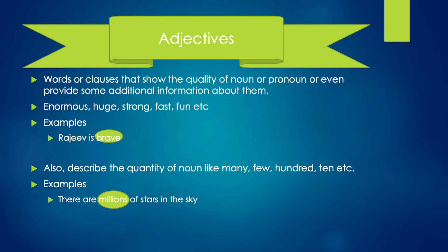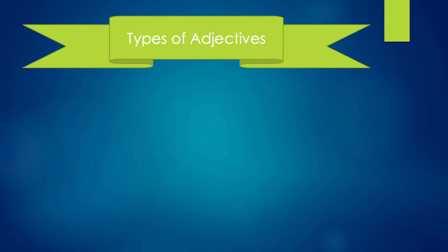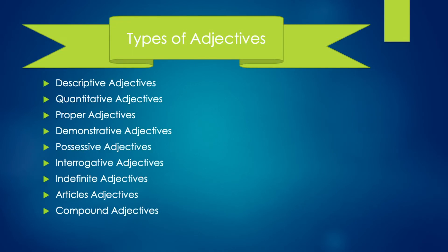Let's now discuss the different types of adjectives. The different types of adjectives are as follows: descriptive adjective, quantitative adjective, proper adjective, demonstrative adjective, positive adjective, interrogative adjective, indefinite adjective, articles, and compound adjectives.